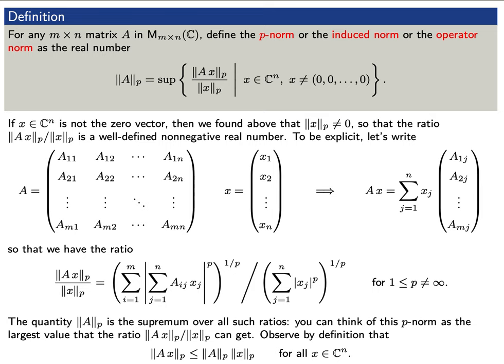To be explicit: if A is an m by n matrix and x is an n-dimensional vector, then A times x is an m-dimensional vector. The ratio is the p-norm of A times x divided by the p-norm of x. The p-norm of A is the supremum — essentially the largest such ratio we can find. We choose this definition precisely so that the p-norm of A times x is less than or equal to the p-norm of A times the p-norm of x for all vectors x.